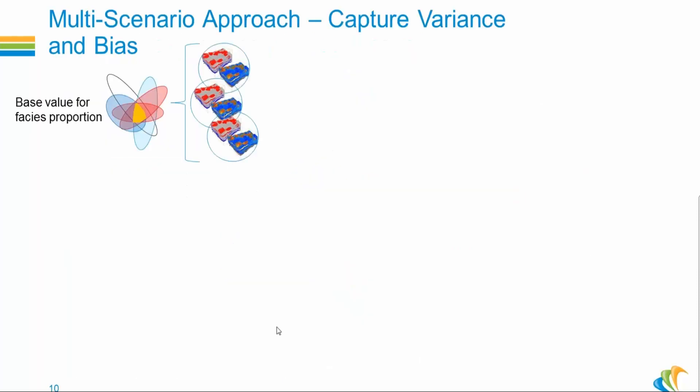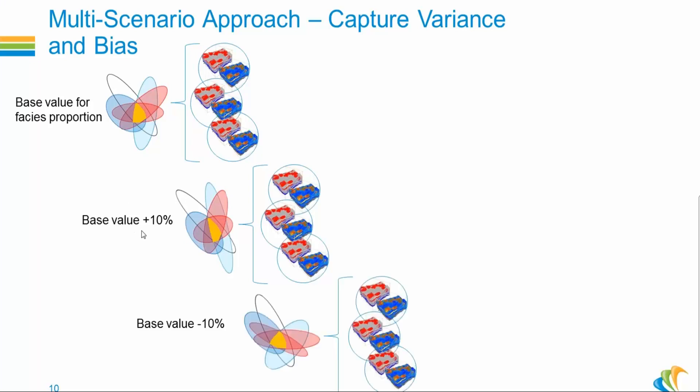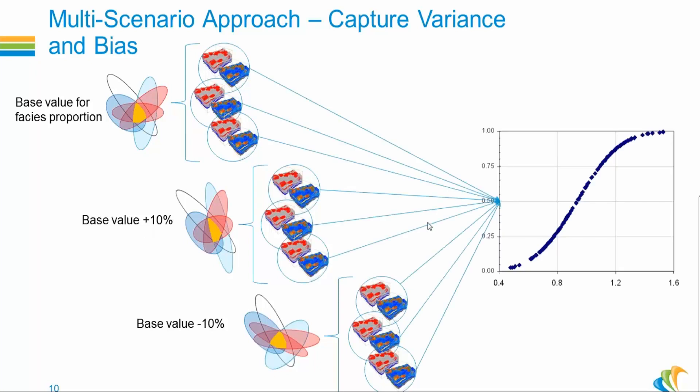So the proper approach is to use a multi-scenario multi-realization approach. So you select the most sensitive parameters, for instance, the prior proportion for the facies. And obviously, the most sensitive parameter has an impact on the ranking criterion as well. So you define variations around the base scenario and you run a certain number of realizations for each variation. The base value plus 10%, the base value minus 10%. And then you combine them all in ranking.